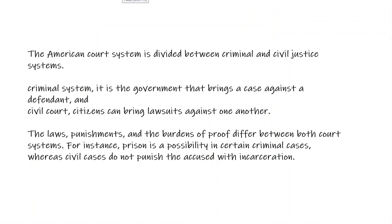The American legal system is divided into two sections: criminal justice and criminal code, and civil justice. Criminal justice is when the government brings a case against the defendant — like criminal code is where it's the city versus so-and-so, the state versus so-and-so, or the government. In a civil case, it is where one citizen brings a lawsuit against another citizen. In the real estate world, most if not all of the court cases we would get involved in would be civil court — one person filing against another person.